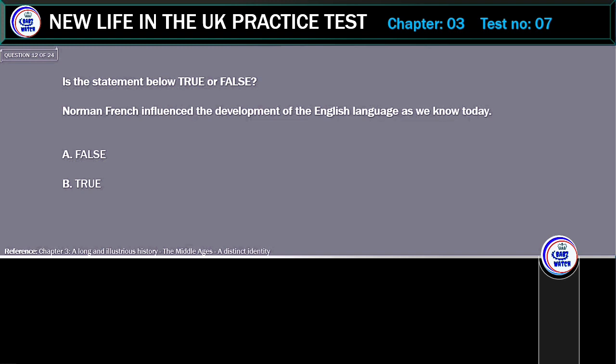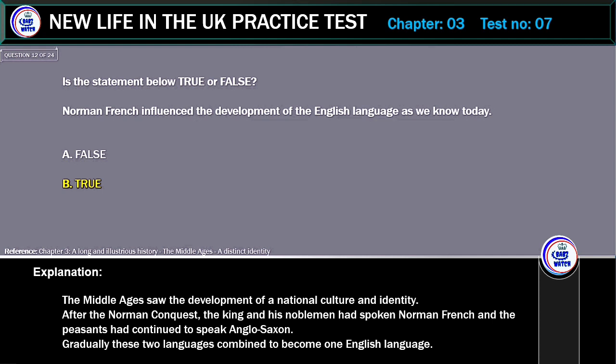Is the statement below true or false? Norman French influenced the development of the English language as we know today. A. False. B. True. Correct answer: True. Explanation: The Middle Ages saw the development of a national culture and identity. After the Norman conquest, the king and his noblemen had spoken Norman French and the peasants had continued to speak Anglo-Saxon. Gradually these two languages combined to become one English language.